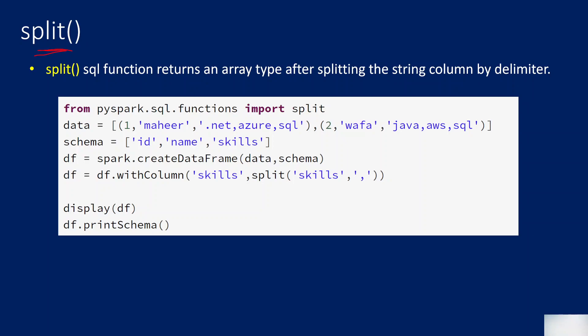Similarly, the split function is also very commonly used. This function will help you split one string into an array. For example, if we have a string column holding skills as comma-separated values, we can use the split function and split the skills column based on comma. It will be split into three elements — element one, element two, element three — and all three elements will become an array.